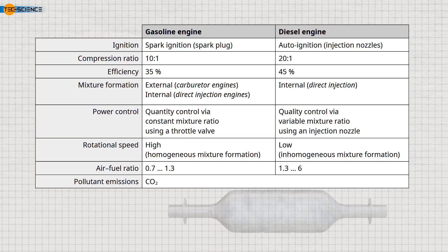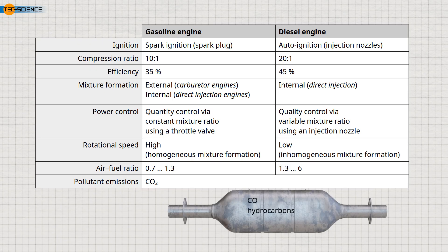In the three-way catalytic converter, toxic carbon monoxide, unburned hydrocarbons, and nitrogen oxides are largely reduced. The nitrogen oxides release oxygen atoms, which are needed for the oxidation of carbon monoxide and hydrocarbons. However, this requires that the three chemicals be present in the exhaust in a balanced ratio to fully react with each other. Of course, this is not always the case, which means that not all pollutants can be filtered out by the catalytic converter.